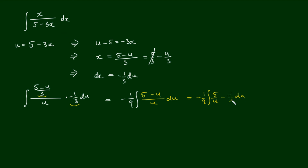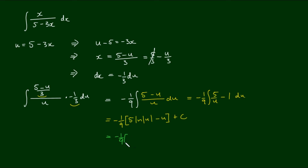And the second term reduces down to 1. This integral evaluates to negative 1 over 9 outside of 5 log u minus u. We close that off and always add a constant of integration for an indefinite integral. And now if we perform the back substitutions, we get negative 1 over 9 outside of 5 times the log of 5 minus 3x minus 5 minus 3x plus c.